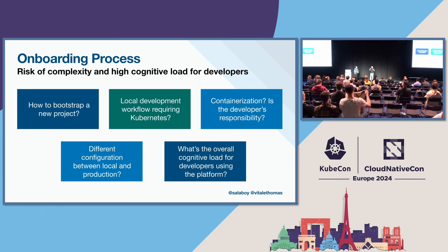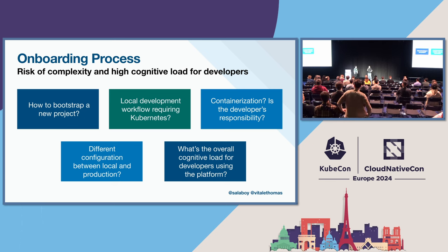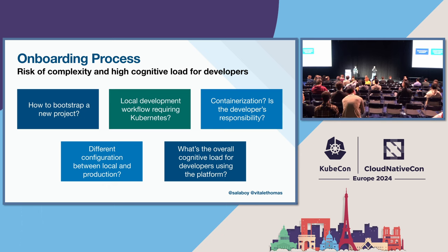An important question for the platform team is: do we want to enforce Kubernetes for local development? If we do, how are we going to set that up? Will it be a local Kubernetes cluster on the developer machine? A remote cluster each developer gets access to? And what about multi-tenancy? This will have a huge impact on developer experience. And of course, we need to containerize applications at some point — using Dockerfiles, with centralized control from the platform team to patch security vulnerabilities.